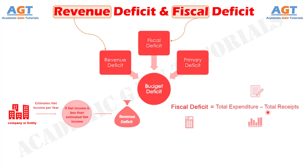Fiscal deficit is a measure that shows the degree of dependence of the government on borrowings. Fiscal deficit reflects estimated borrowings by the country's government. That is, the higher the fiscal deficit, the more will be the government borrowings.